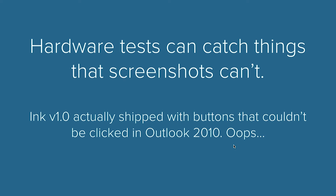In the first version of Ink, we actually shipped it with buttons that couldn't be clicked in Outlook 2010. We had done a ton of iteration on the screenshot service to validate that it was all looking proper, but we hadn't actually validated it as clickable. We had put in a hack, and it did not work as we thought it was going to.